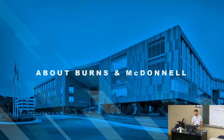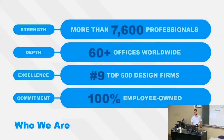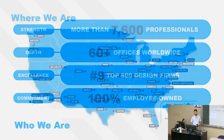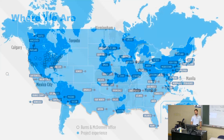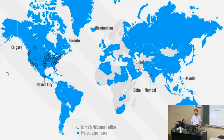Burns and McDonald is an engineering and construction firm with over 7,600 professionals — now over 8,000 as we've been growing — with 60-plus offices worldwide. We're the number nine ranked design firm according to Engineering News-Record and a 100% employee-owned company. We have offices in almost every major city across the U.S., with headquarters in Kansas City, and several international offices with project experience highlighted across many countries.